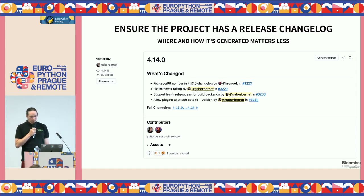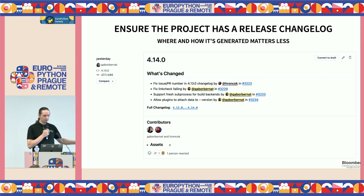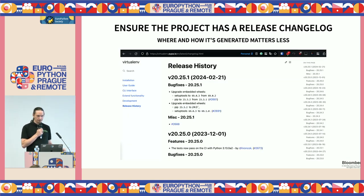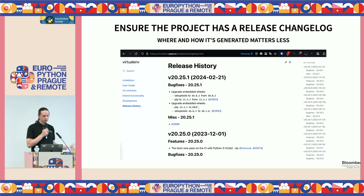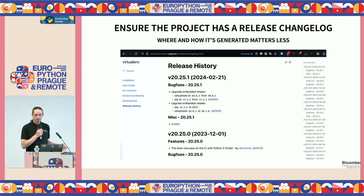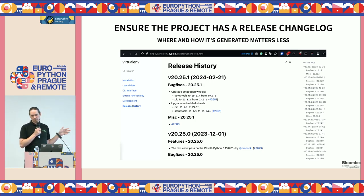If you are maintaining a project, always have a release changelog. I don't mind whether it's just a GitHub releases page or a dedicated section in your documentation, but somewhere show what happened in each release so users can see what changed between versions and decide whether they care enough to upgrade.